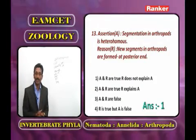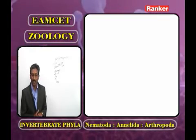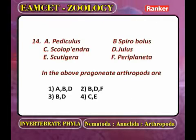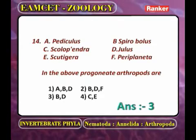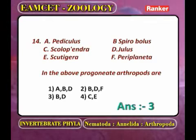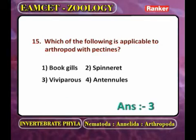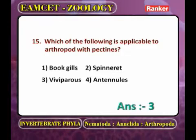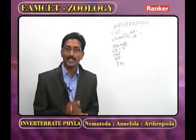In progoniata arthropods, the genital pore is at the anterior end of the body. Examples are Spirobolus and Julus, both coming under Diplopoda. Regarding the question on arthropods with pectins: the answer is viviparous — specifically the scorpion in class Arachnida. The scorpion has chelicerae, pectins, and is viviparous.